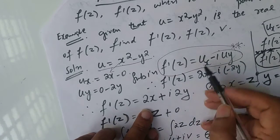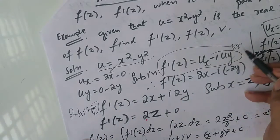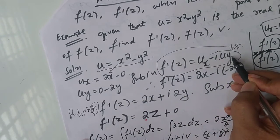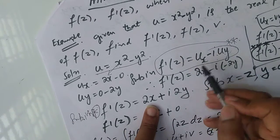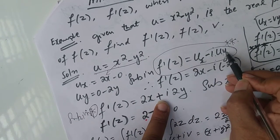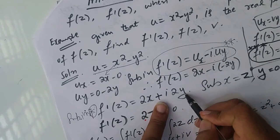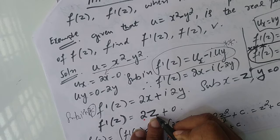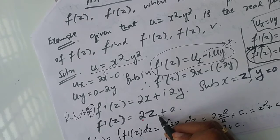Now applying the formula f'(z) = ux - i·uy. Substituting ux = 2x and uy = -2y, we get f'(z) = 2x - i(-2y). Now substitute x = z, y = 0: the term 2x becomes 2z, and y = 0 eliminates the imaginary term. So f'(z) = 2z.